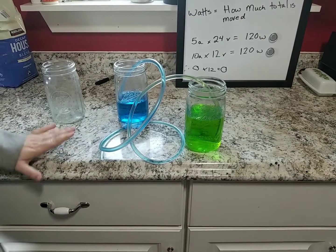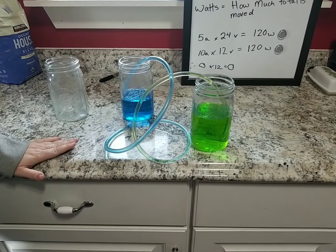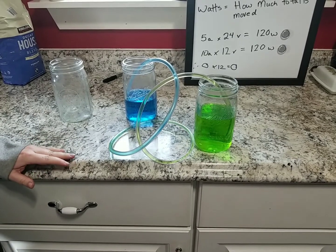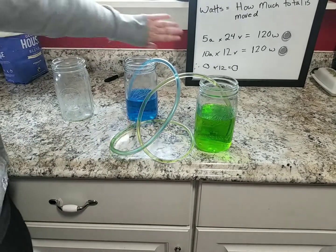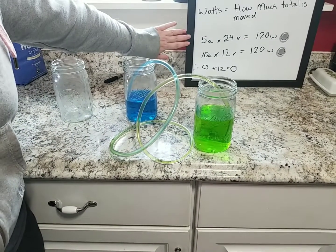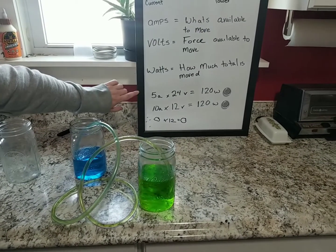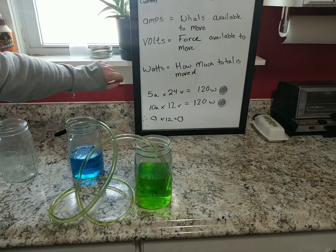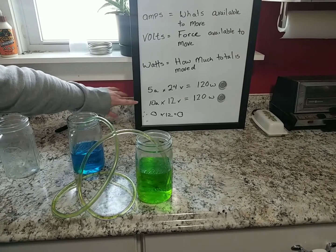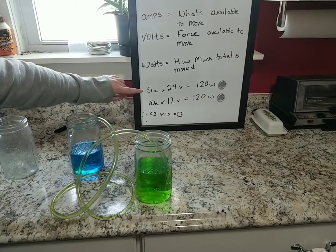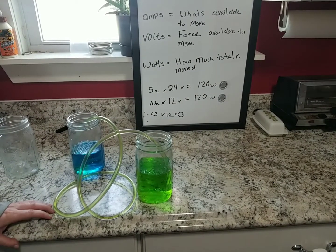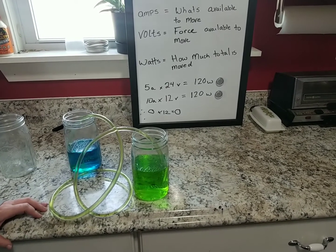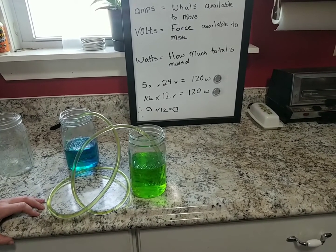We also can get different wattage results using amps or volts in different ways. As you can see in our example here, 5 amps multiplied by 24 volts equals 120 watts, whereas 10 amps multiplied by 12 volts also equals the same amount of end power, but in a very different formulation.